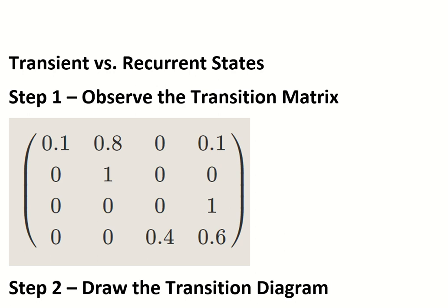I'm going to go over how to label transient and recurrent states in a Markov chain. Let's say you start out and you have a transition matrix.